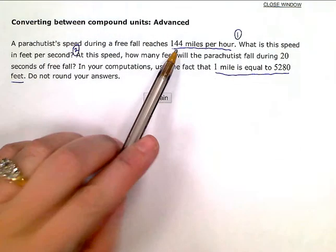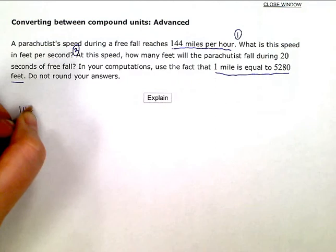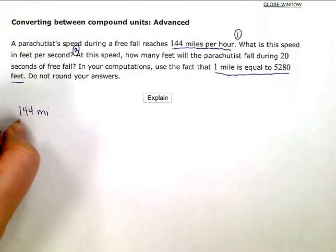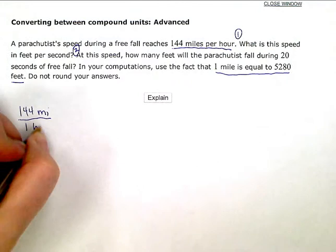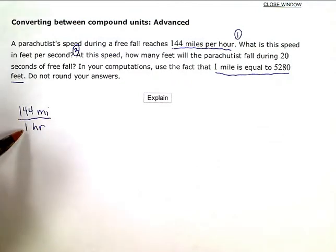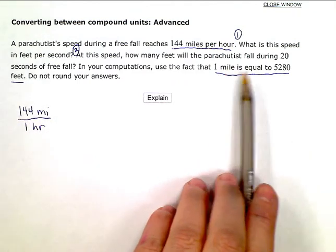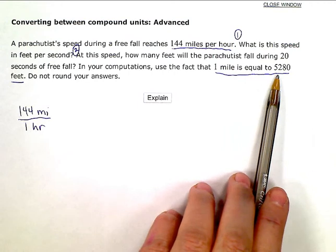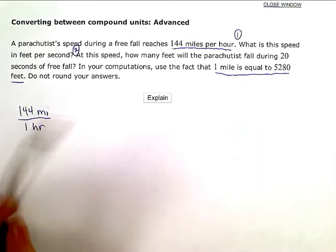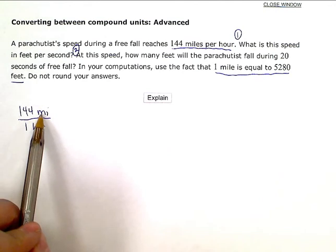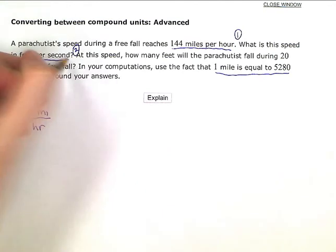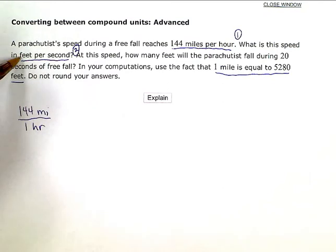So my beginning rate is 144 miles per one hour, or 144 miles every one hour. And I'm going to write this as a ratio, and then I'm going to use this conversion information here. One mile is equal to 5,280 feet to help change my miles into feet because I want to end in feet per second. So feet is my units in the numerator or on top, second is my units down here in the bottom, in the denominator. So miles per hour into feet per second.